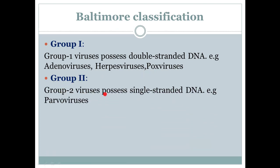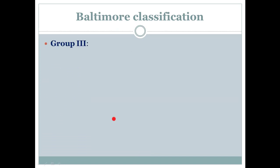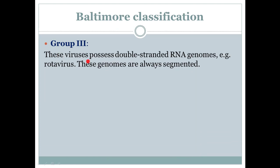Group 2 viruses possess single-stranded DNA. An example is parvovirus. These two groups — Group 1 and Group 2 — are the DNA viruses in Baltimore Classification. Viruses in both these groups fall under the category of DNA viruses.